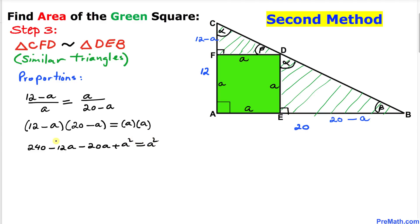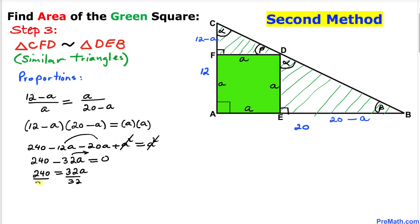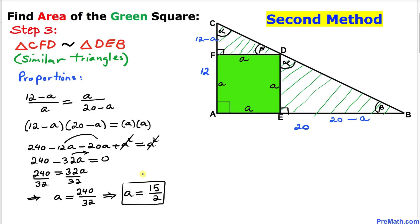Combining like terms: 240 minus 32a plus a squared equals a squared. The a squared terms cancel, leaving 240 minus 32a equals 0. Moving the term over gives 240 equals 32a. Dividing both sides by 32, our a value turns out to be 240 divided by 32, which reduces to 15 divided by 2.